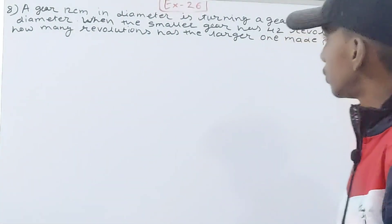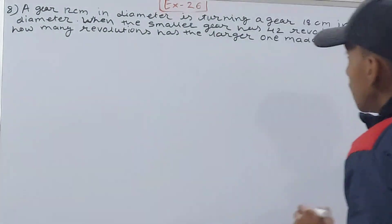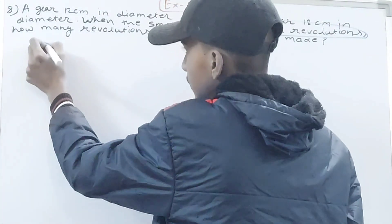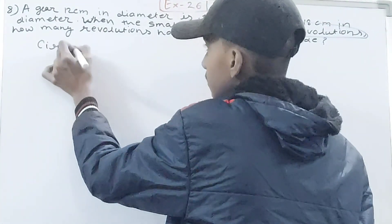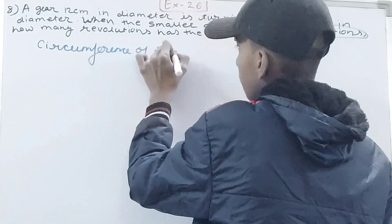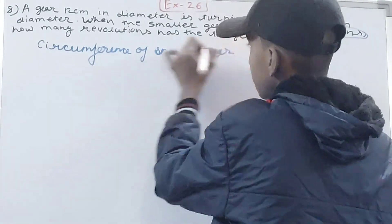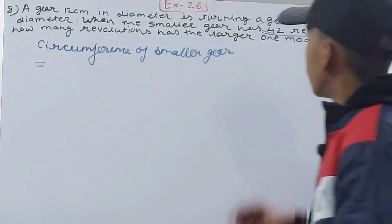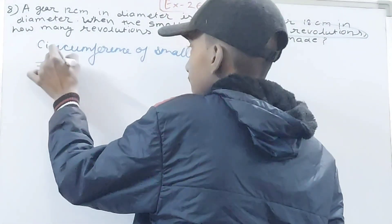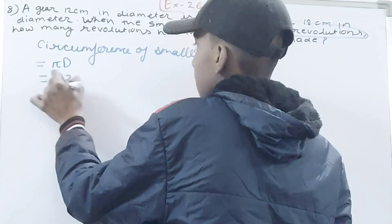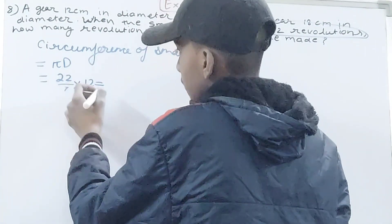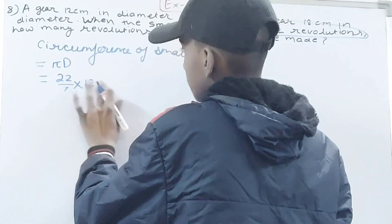You can see that when the smaller gear has 42 revolutions, so circumference of smaller gear will be: the gear is 12 centimeter in diameter, so πD, that is 22/7 × 12.